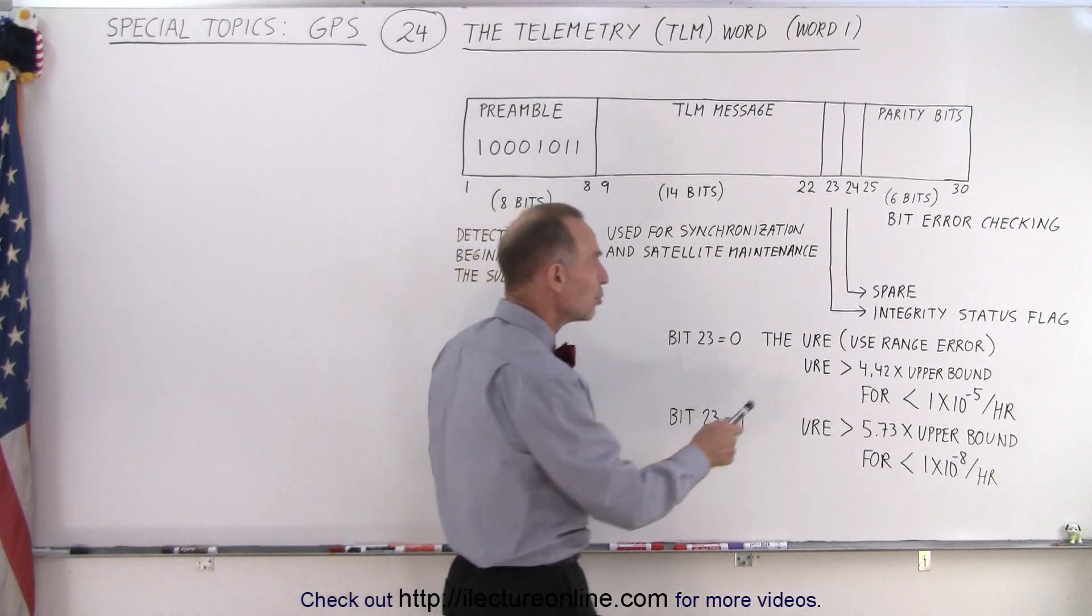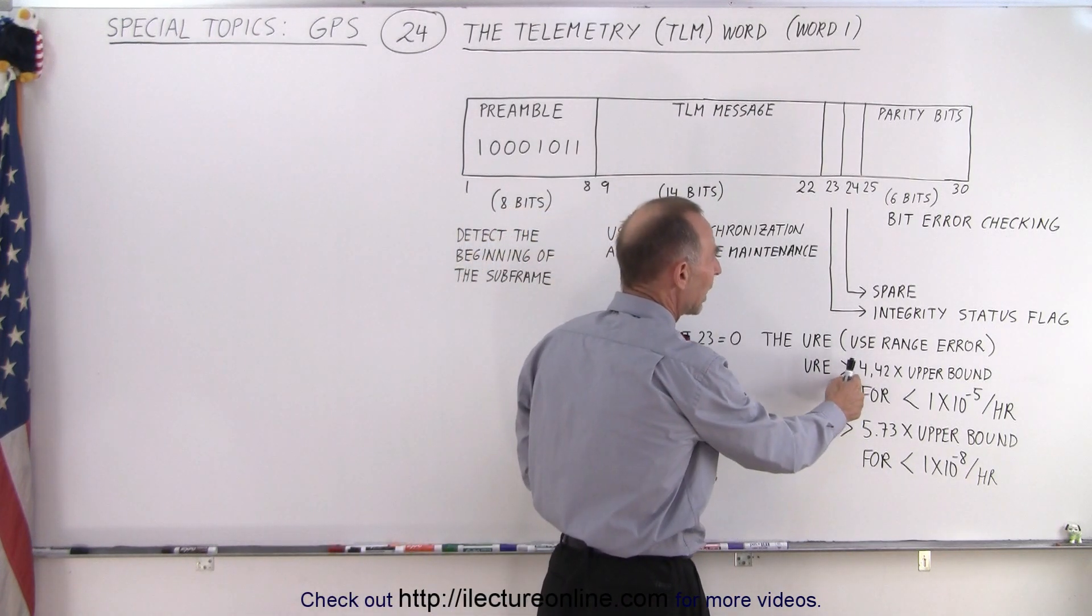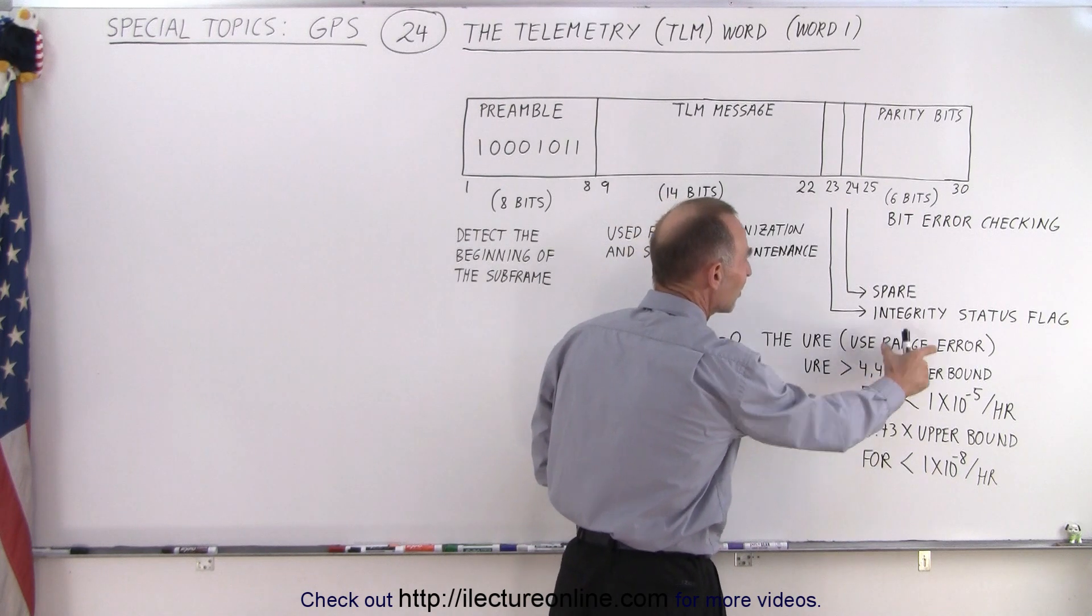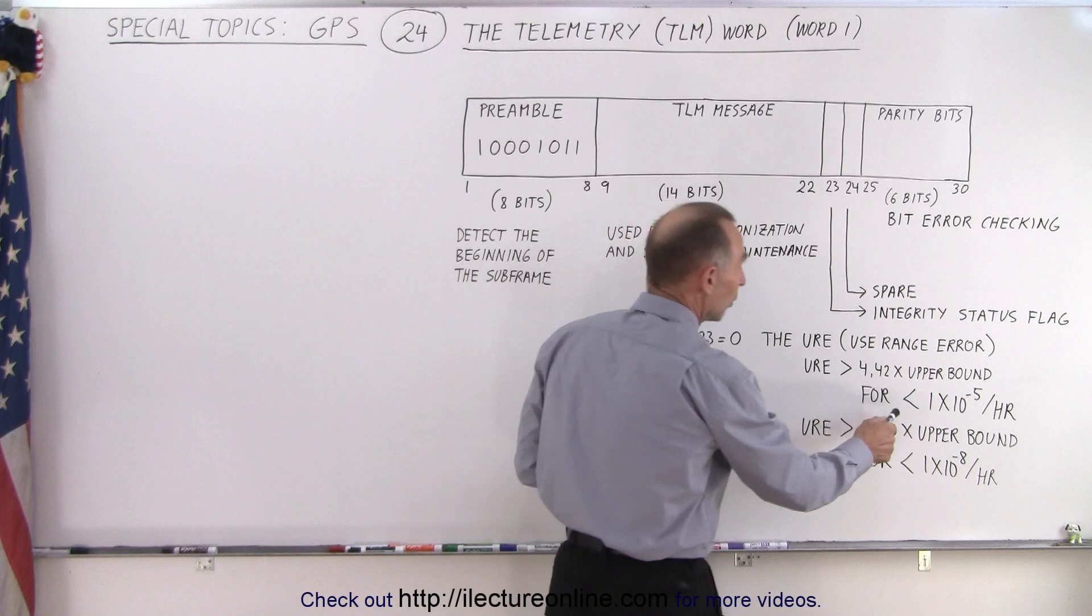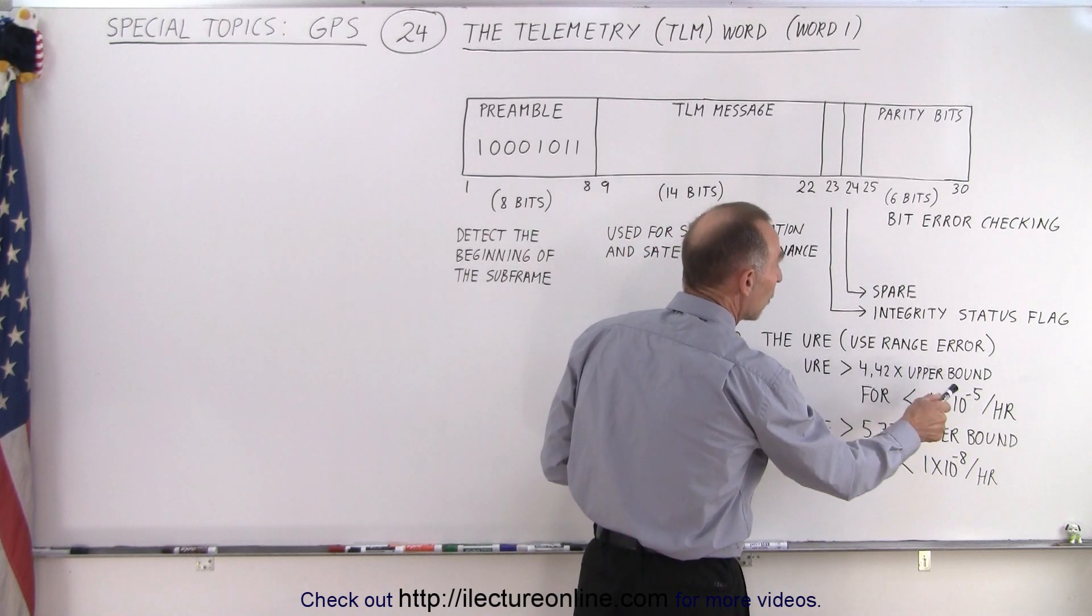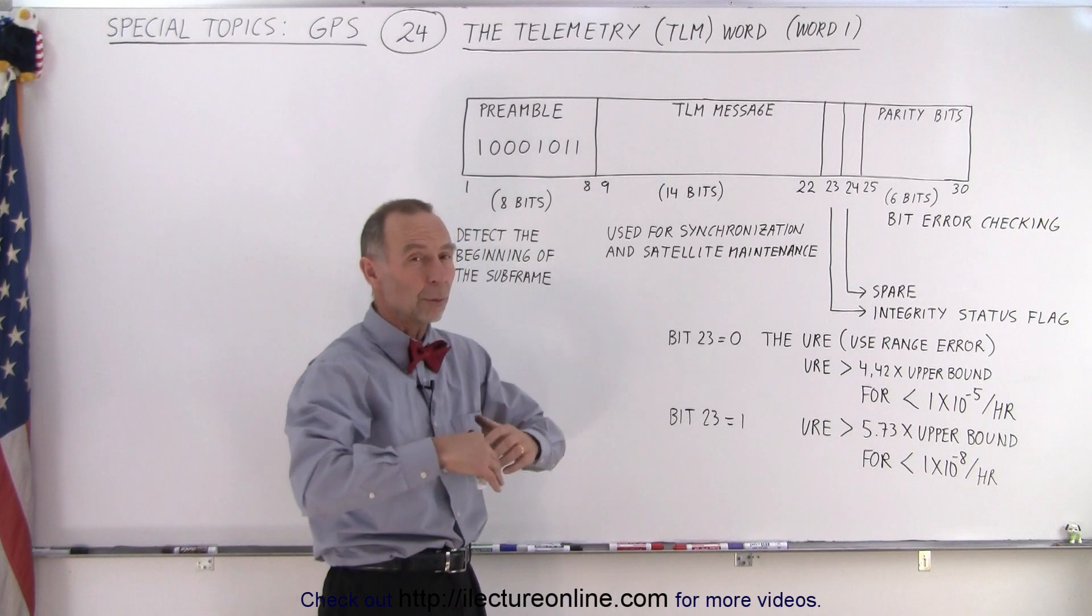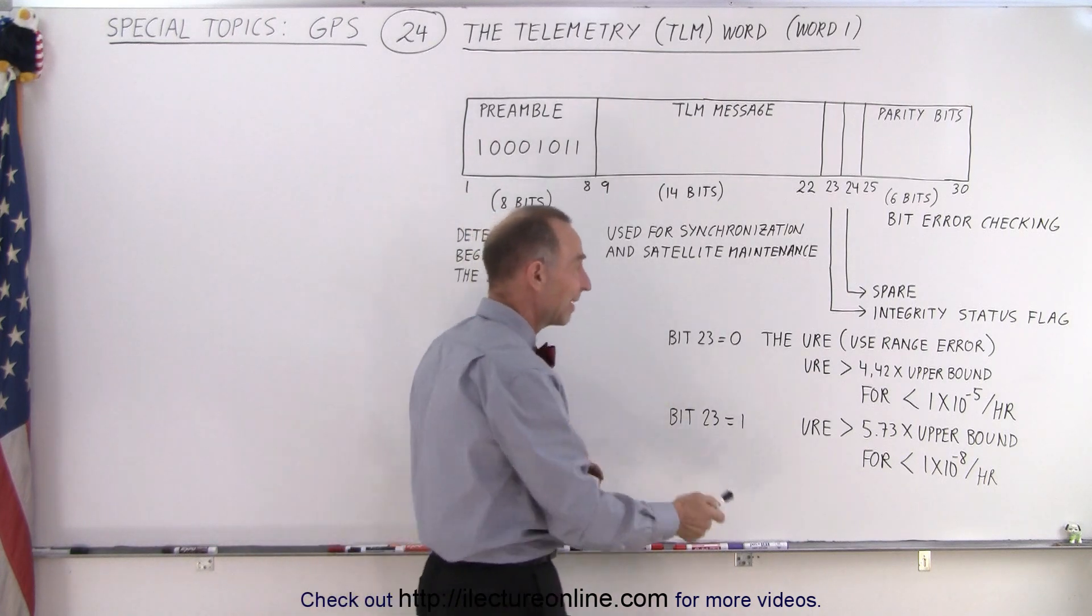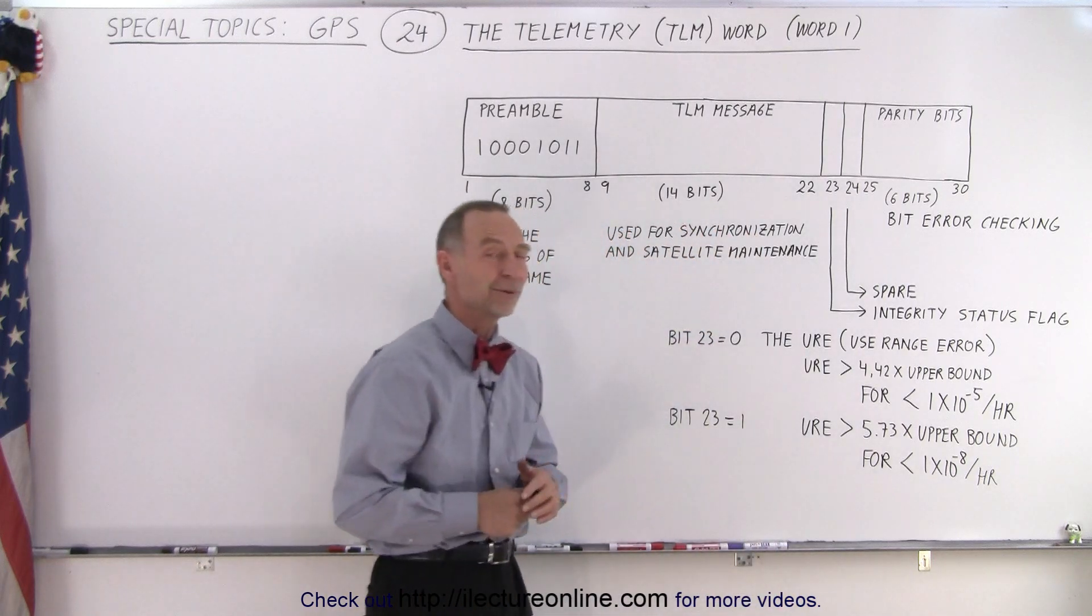what that means is that the URE, the expected error, will not be greater than 4.4 times the upper bound, whatever the upper bound is at that time, for less than one in 100,000 occurrences per hour. In other words, we should be able to go 100,000 hours in that setting and only once go over 4.42 times the upper bound.